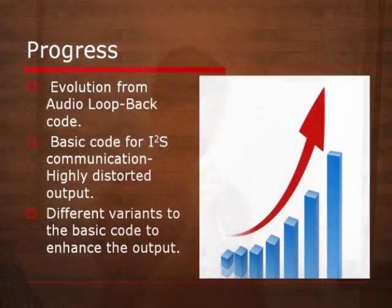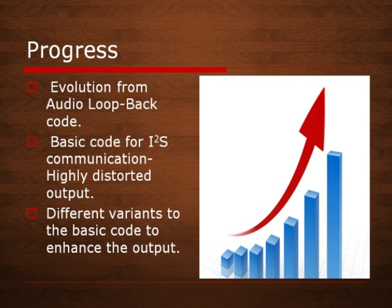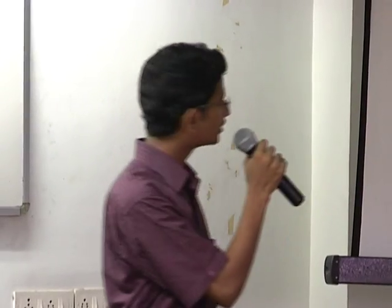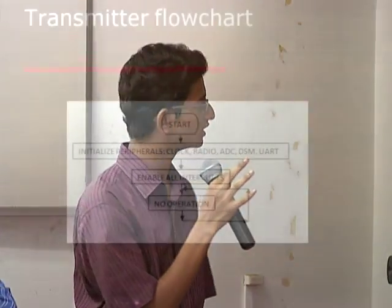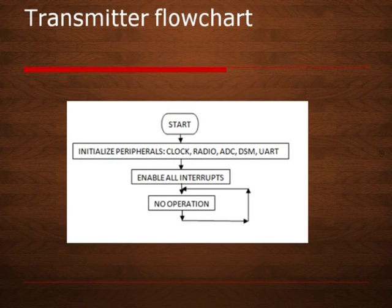Speaking about the progress of the code: the clicker lab had already developed code for simple audio loopback, where you speak into the mic and hear from the same device. We had that code and had to improvise it. We made code for I²S communication but found it was highly distorted, so we tried different variants to find where the problem was. In the transmitter part, CC2511 has 4 timers; we set timer 1 to 8 kHz so it generates an interrupt at every specific interval of time. In the timer ISR we are doing the sampling, filling the buffer, and then sending it.